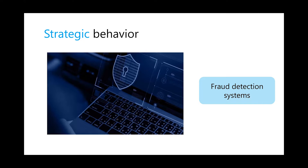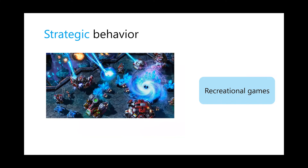Another example is protection systems — the situation is strategic in the sense that you always have people who want to protect systems and people who want to break them. You have to strike a fine balance between security and friction for users: you don't want to turn away users with too much friction, but at the same time you cannot open vulnerabilities that people will exploit.